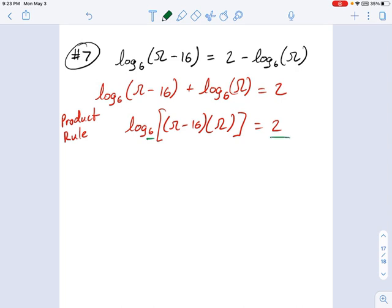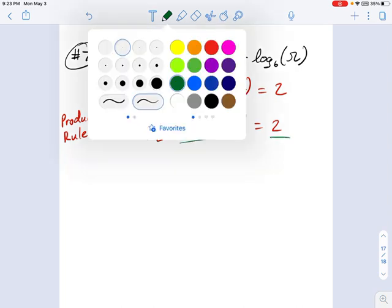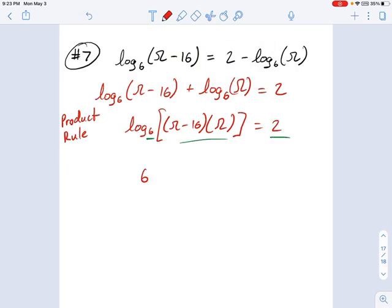6 to the power of 2 equals this argument. So let's write that out. We'll say 6 to the power of 2 equals omega minus 16 times omega, and that's it.